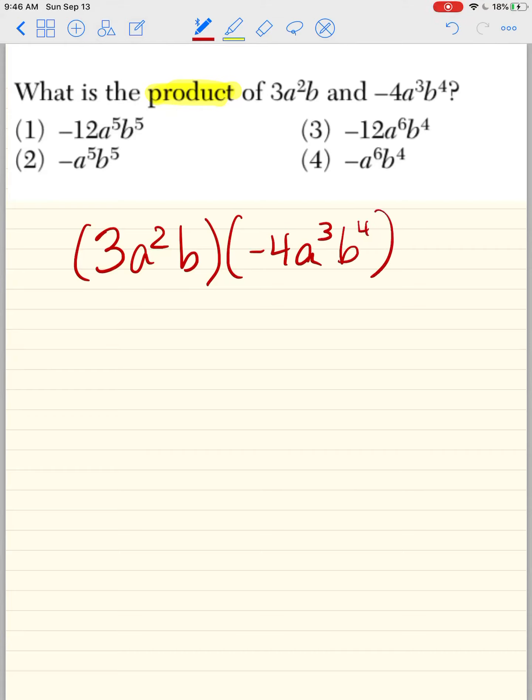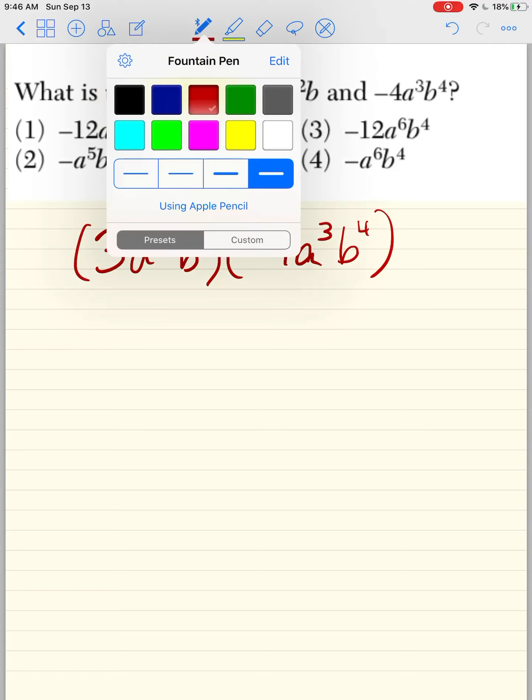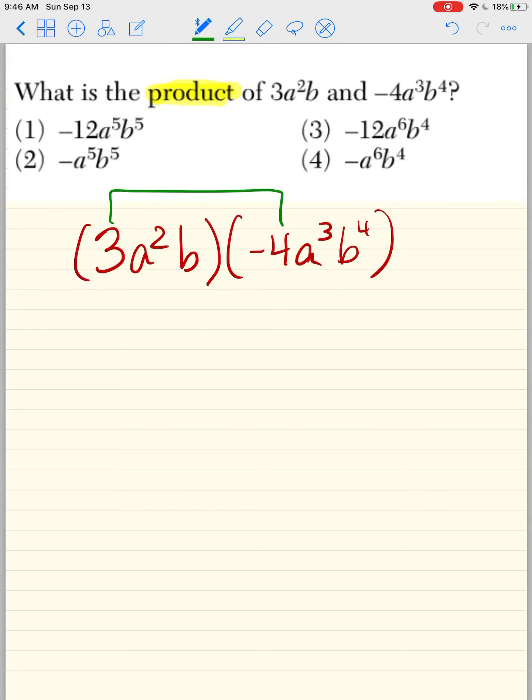Okay, that's the best way to practice. So I said to multiply, multiply the coefficients, 3 times -4 is -12, and then multiply the same. When you multiply the same variables, you keep the variable and then you add the exponents.